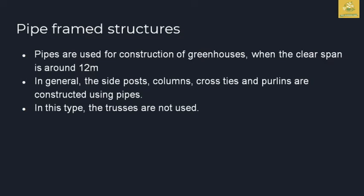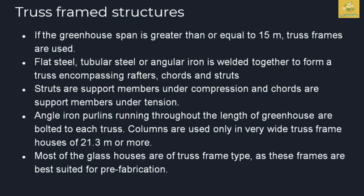The pipe frame structure spans about 12 meters. Looking at the side posts, cross ties, and purlins, you can construct using pipes. The truss frame structure spans up to 15 meters. Wood spans 6 meters, pipe spans 12 meters, and truss spans 15 meters. The truss is a supportive structure using flat steel, tubular steel, and angular iron volumes.